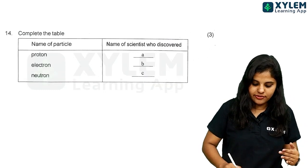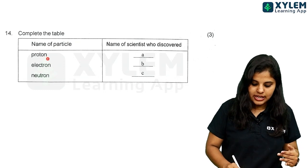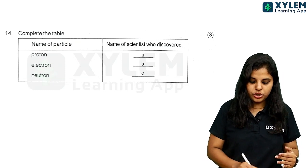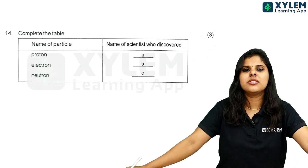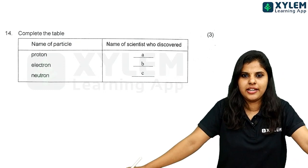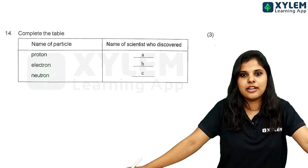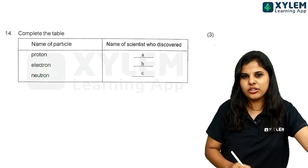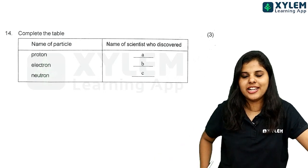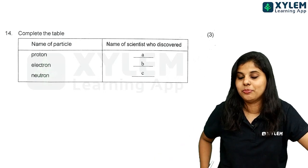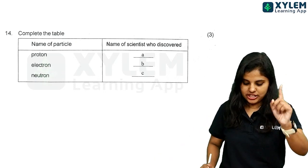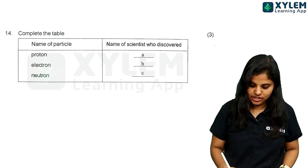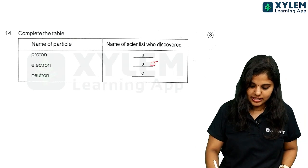The first one is proton, then electron, and neutron. How do you remember it? You can use the electron — J.J. Thomson. J.J. Thomson is associated with the electron. This is a trick.